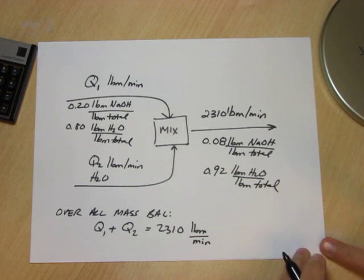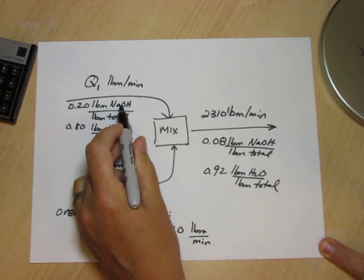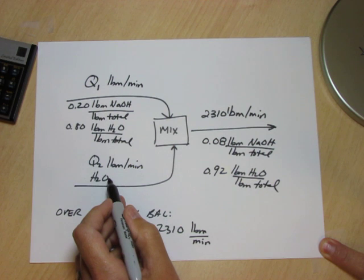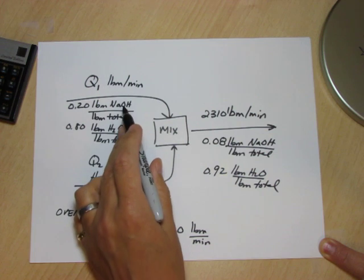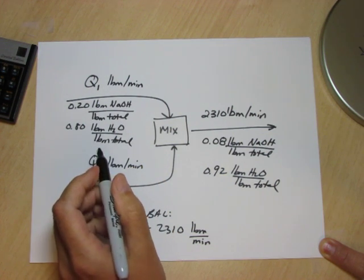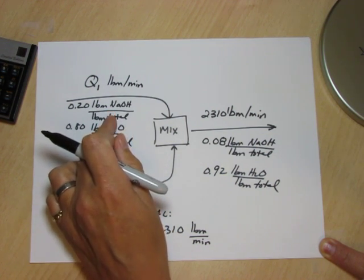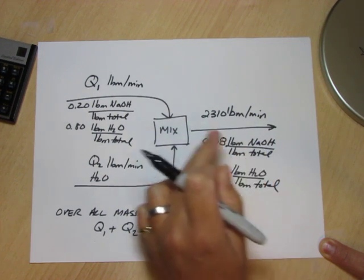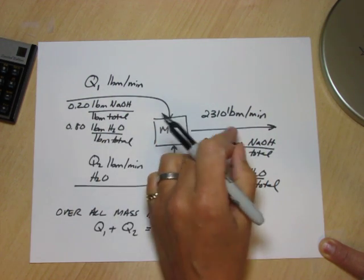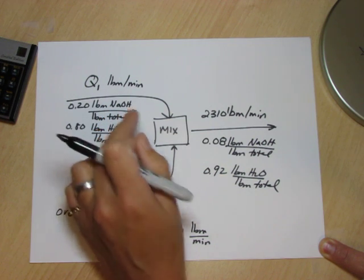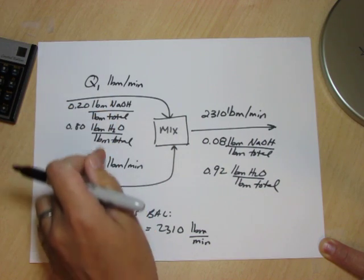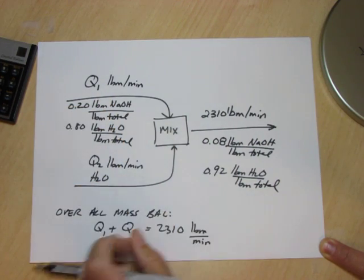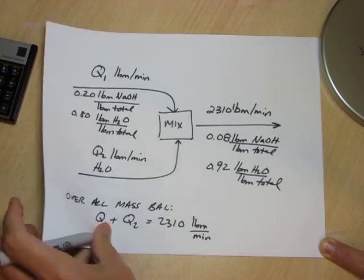We're certainly going to need that balance as we go forward with the problem. The second balance we can do is either the sodium hydroxide or the water. Both will lead us to the solution. The sodium hydroxide balance is a little bit easier because it only comes in one place and leaves one place. That's called a tie component. The component that comes in one place and leaves one place is much easier to get information out of than one that comes in two places and leaves one place. So the second balance I'll do is going to be the sodium hydroxide balance.